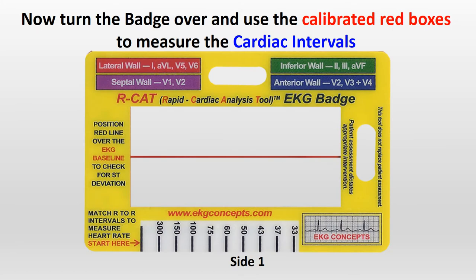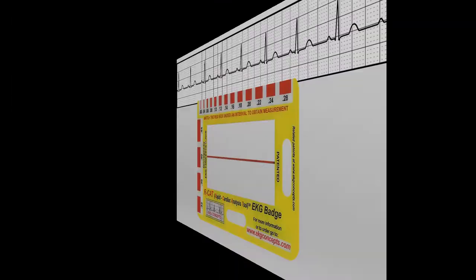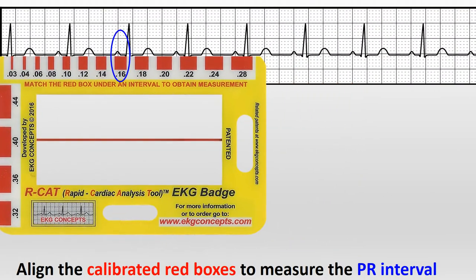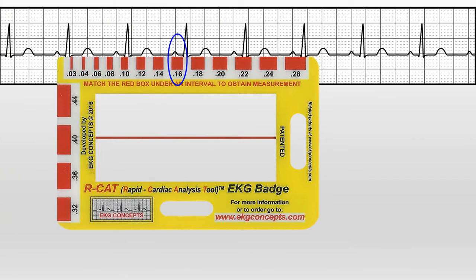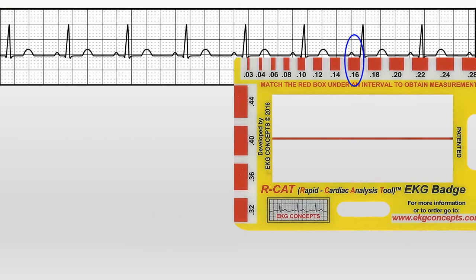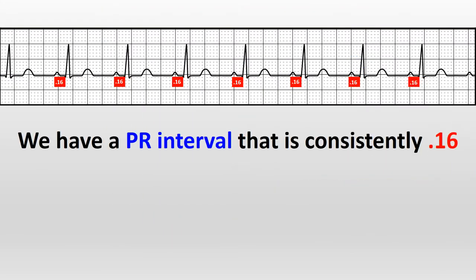Now turn the badge over and use the calibrated red boxes to measure the cardiac intervals. Align the calibrated red boxes to measure the PR interval. We have a PR interval that's consistently 0.16.